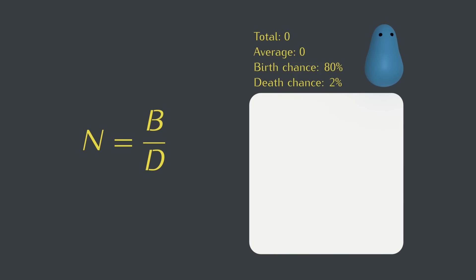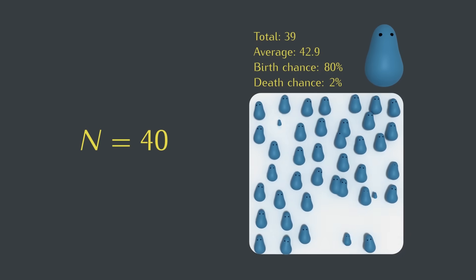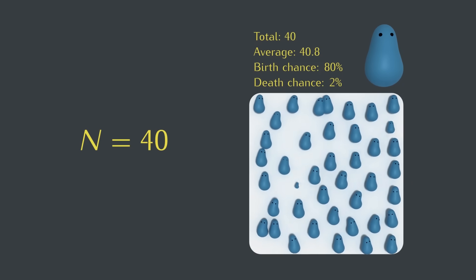So now if we set up a new simulation with a birth chance of 80% and a death chance of 2%, what equilibrium number should we expect? Well, the formula tells us it should be 40, so let's see what the simulation does. Looks about right.